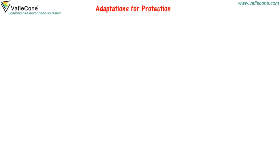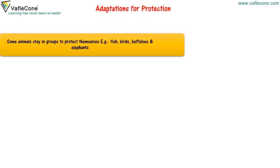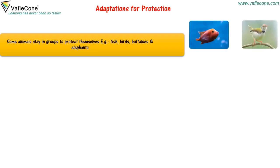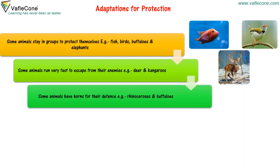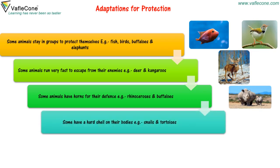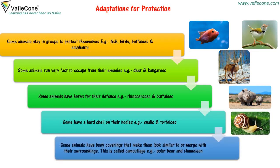Adaptations for Protection: Some animals stay in groups to protect themselves, for example, fish, birds, buffaloes, and elephants. Some animals run very fast to escape from their enemies, for example, deer and kangaroos. Some have horns for defense, for example, rhinoceroses and buffaloes. Some have hard shells, for example, snails and tortoise. Some animals use camouflage — body coverings that make them blend with their surroundings — for example, polar bear and chameleon.